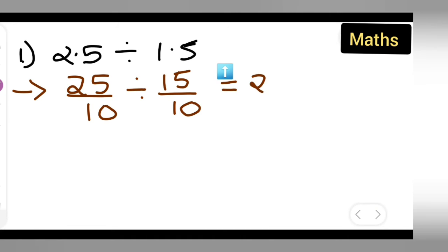Now this equals - write down 25 over 10. Now we have to divide it by 15 over 10. So the reciprocal of 15 over 10 is 10 over 15.